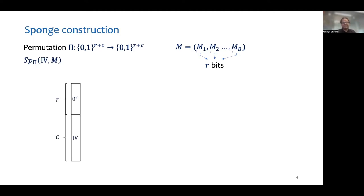Here's a very simplified view of how sponge hashing works. The fundamental primitive in the sponge construction is a permutation pi on r plus c bits. Message M is broken up into blocks of r bits after padding appropriately. The hash of M with respect to the hash key or the initialization vector, IV, is computed as follows. An initial state consisting of r zeros concatenated with the IV is defined. The first message block is XORed to the first r bits of the state and the permutation is applied to it in order to compute the next state.